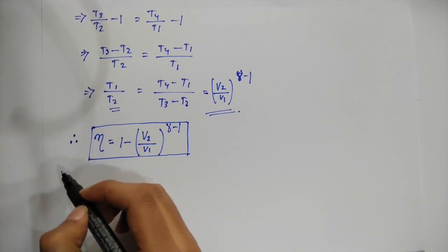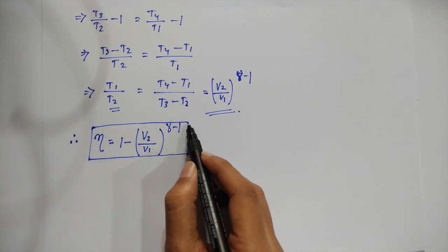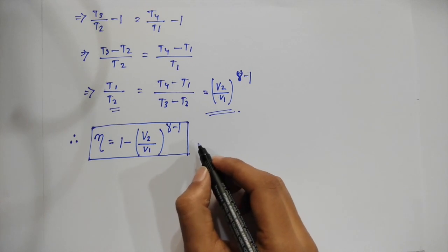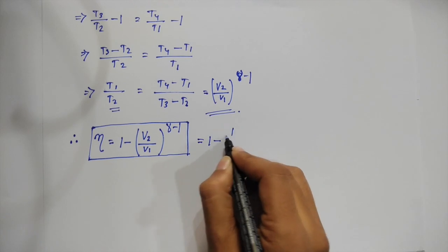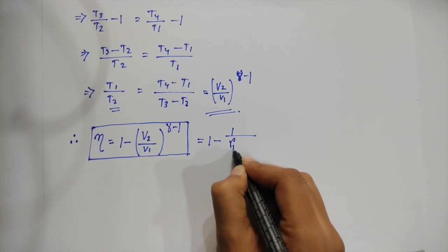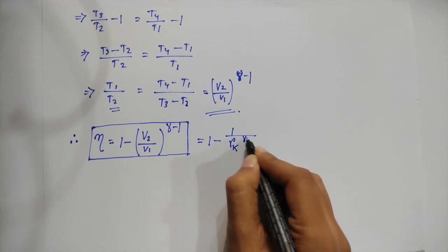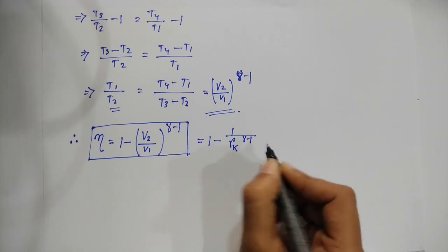Further processing this equation with newer terms, we can write it as 1 minus 1 by Rk to the power gamma minus 1. Here Rk, that is equal to V1 by V2, is known as the compression ratio.